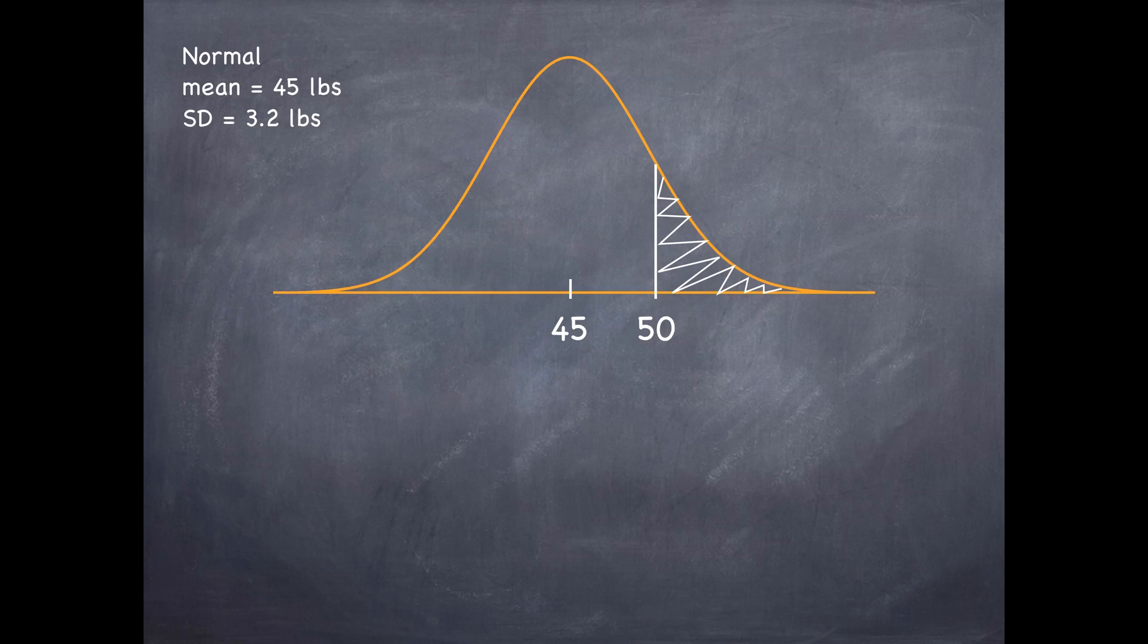We first want to start with finding how many standard deviations away from the mean 50 is. In other words, calculate the z-score as the observation minus the mean divided by the standard deviation. In context, that's going to be 50 minus 45 divided by 3.2, which is 1.56 standard deviations above the mean.